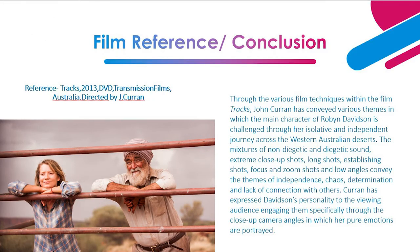Through the various film techniques within the film Tracks, John Curran has conveyed various themes in which the main character Robin Davidson is challenged through her isolated and independent journey across the Western Australian deserts. The mixtures of non-diegetic and diegetic sounds, extreme close-up shots, long shots, establishing shots, focus and zoom shots and low angles convey themes of independence, chaos, determination and lack of connection with others. Curran has expressed Davidson's personality to the viewing audience, engaging them specifically through the close-up angle shots in which her pure emotions are portrayed.